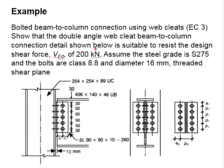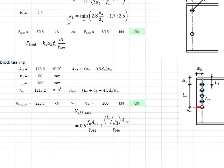It is given in the question that the shear load is 200 kN and your resistance is greater than 200 kN. You will expect the block tearing resistance is acceptable.